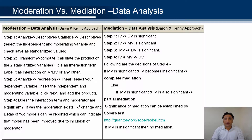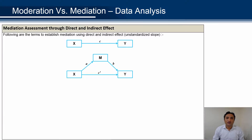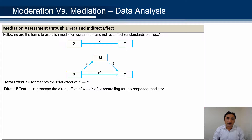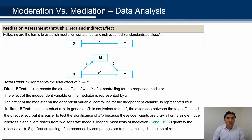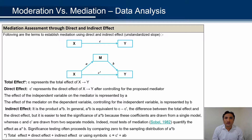Mediation is established, but we have not yet established that the mediation is significant. It can be tested through Sobel's test. Now, C represents the total effect, which is the path X to Y. C' represents the direct effect after controlling for the proposed mediator, which is also the path X to Y. The indirect effect is the effect of path A multiplied by path B, and it is normally equivalent to C minus C'.